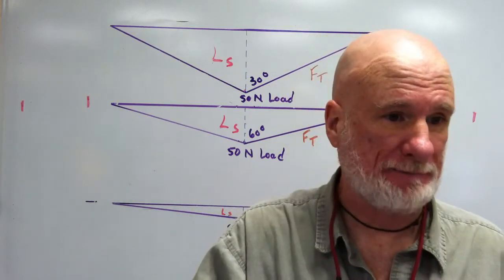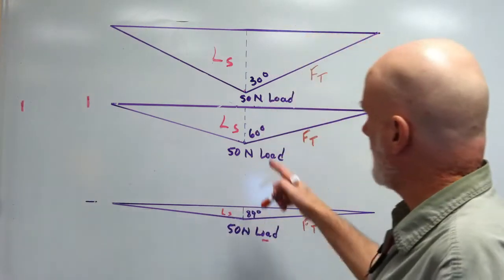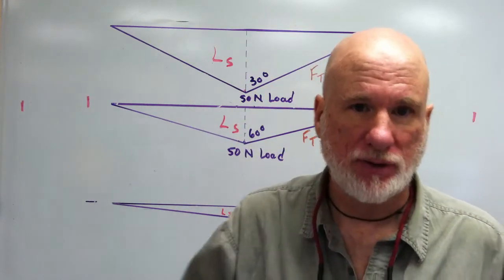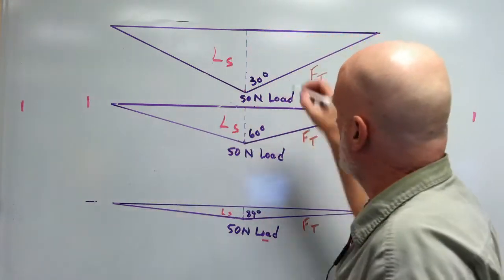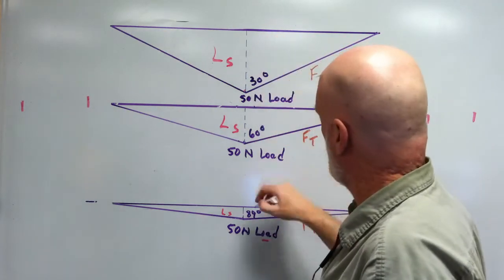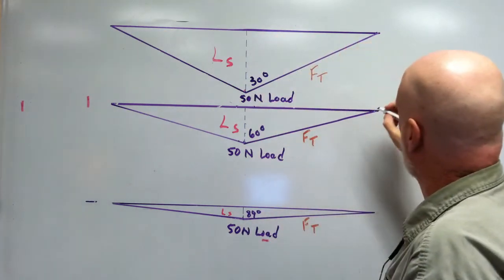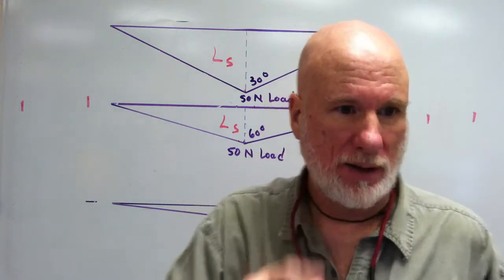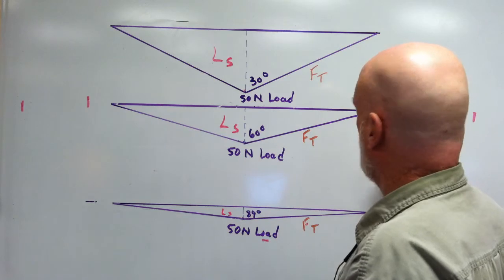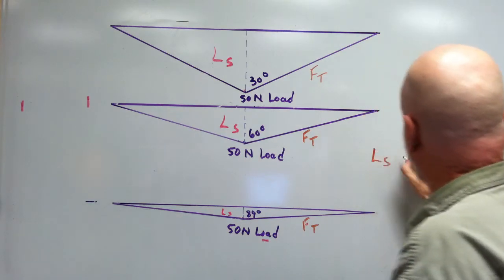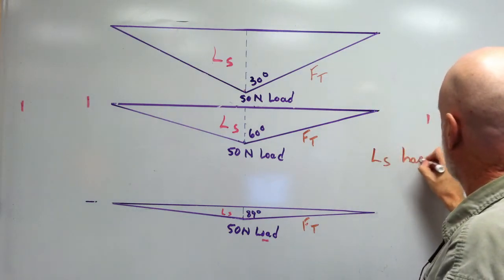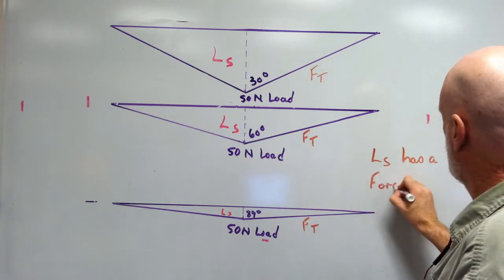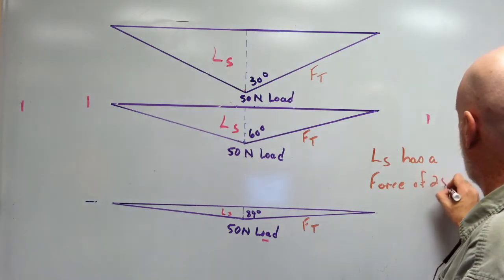You need your calculators. We know that half the load is going to be 25 Newtons, so on all of these diagrams this is going to be 25 Newtons. The vertical line — we'll call it L S — is just a line. L S has a force of 25 Newtons.